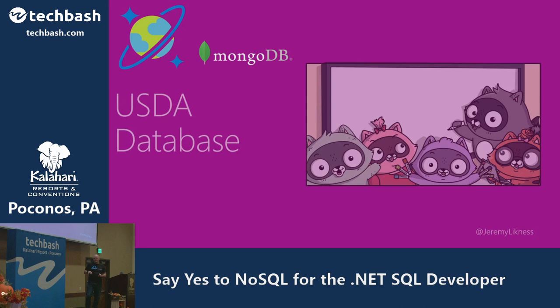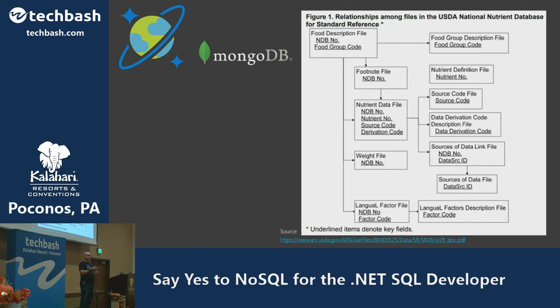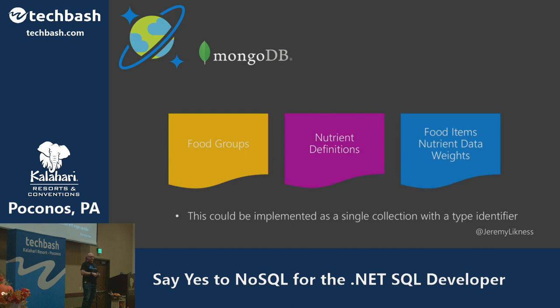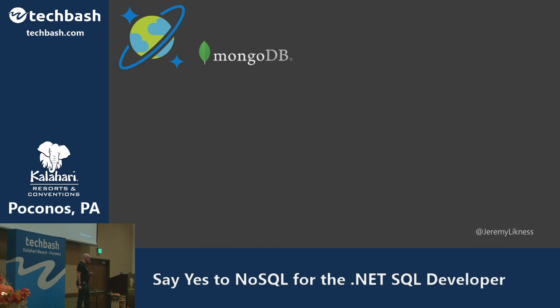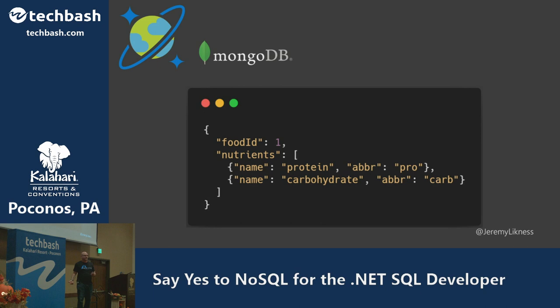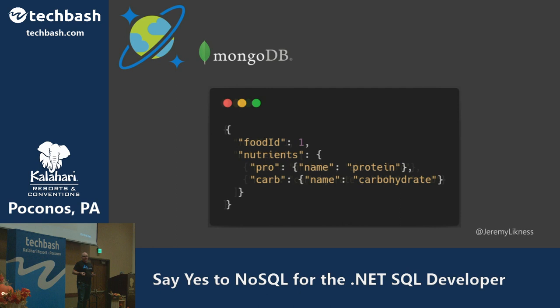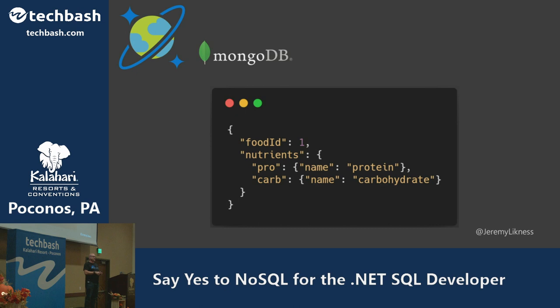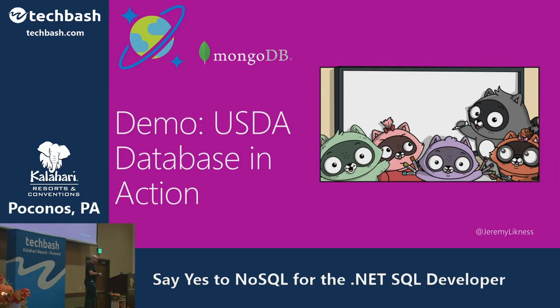Moving to the MongoDB API — I used the USDA database, a public database with about 12 relational tables that I mapped into three collections: food groups, nutrient definitions (protein, carbs, fat, calories), and food items that aggregate all the others. Different food items have different amounts of nutrient data, so we model nutrients as an array. To take advantage of indexing though, I can't index on an array — but since I'm not locked into a schema, I can have one item with a protein and carb property and the next document with just protein, then take advantage of automatic indexing.